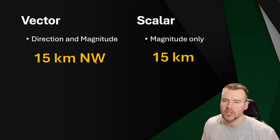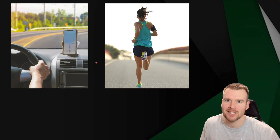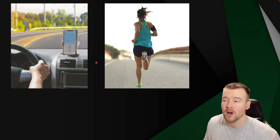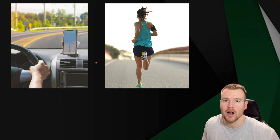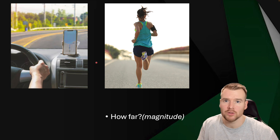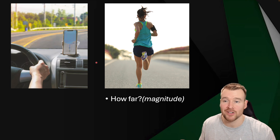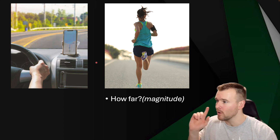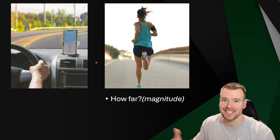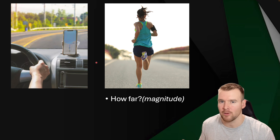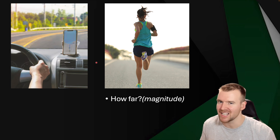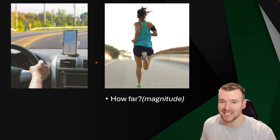When are we interested in direction and when are we not? If someone goes for a run and says 'I ran five kilometers,' that's the most important piece of information about that run. We don't really care about direction — you could have done laps on a track or run straight forwards and backwards. The distance determines how difficult the run was, not the direction. So that'd be a scalar quantity.